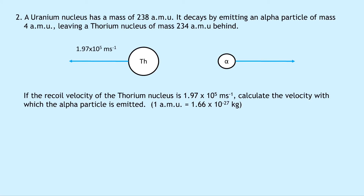Question two says that a uranium nucleus has a mass of 238 amu (atomic mass units). It decays by emitting an alpha particle of mass 4 amu, leaving a thorium nucleus of mass 234 amu behind. We can see the thorium nucleus and the alpha particle in the after situation.